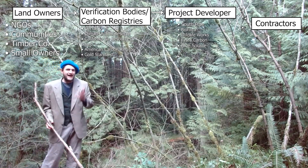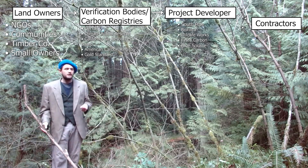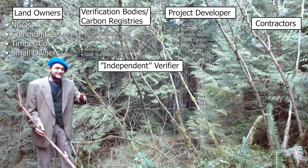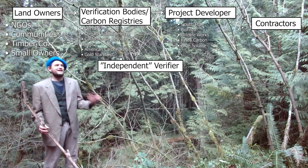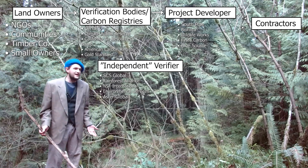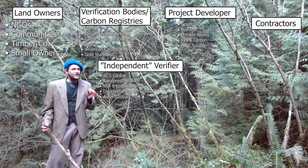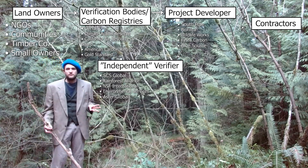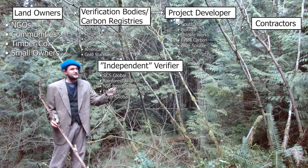Once a project developer has put together a project description, they need to consult with an independent verifier. These are verifiers certified by the registry bodies as being independent, who can consult on whether or not the project is doing what it should and sign off on it. These guys include folks like SCS Global, Rainforest Alliance, NSF International, Environmental Services, and ASTRO Global. But there's a real question about how independent these verifiers actually are. The American Carbon Group, for example, only has four verifiers that they allow for all their carbon projects. One thing to keep in mind is that these verifiers are being hired by the project developers themselves to sign off on these things.